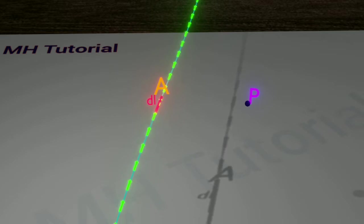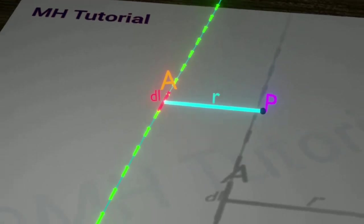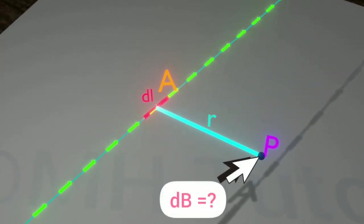Let us concentrate on this portion of the wire, DL, about the point A. Distance between point A and point P is R. We shall now calculate the magnetic field at point P due to this small portion of the wire. So, let's start.